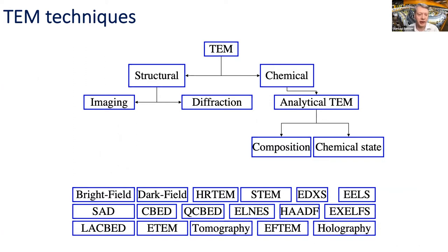Because we have imaging capabilities and analytical signals, we can do many different experiments providing structural information. We can obtain diffraction information using Bragg's law with electrons — very sensitive and valuable techniques. We can also get chemical information using X-ray detectors and energy loss spectrometers. Available techniques include electron energy spectroscopy, EELS, high-angle annular dark field, holography, tomography, and others. We could spend an entire tutorial on one technique, but we'll focus on electron energy loss spectroscopy.